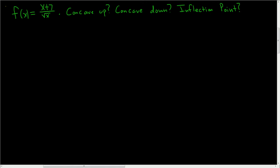We have a function and we want to know where it's concave up, where it's concave down, and also what is the inflection point. To do all of this we have to find the second derivative and set it equal to zero.